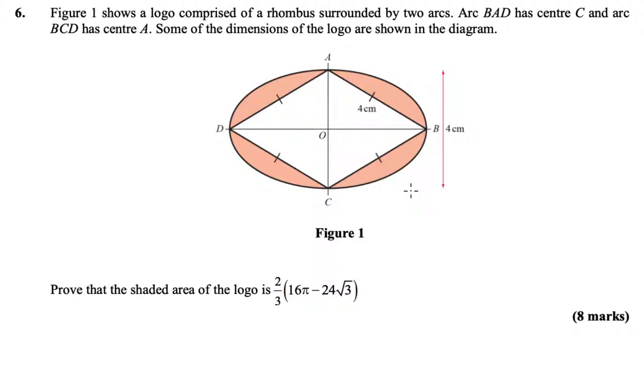Okay, question six is one of our area questions. It's not an integration question though, it's to do with sectors and circles. Now this isn't a circle, it's two arcs that have been squashed together. There's a bit missing that's stopping them from being circles. It's a strange looking shape.